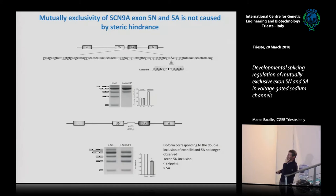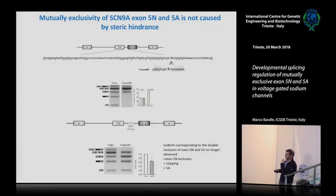We didn't see both exons being included; rather, the double-inclusion artifact disappeared. We saw a decrease of 5N inclusion and a slight increase of 5A. In our mind, this suggested that by inserting the spacer element, we were distancing cis-acting elements in this region that were necessary for exon 5N and possibly exon 5A inclusion.